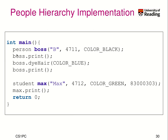How do we use it? We have person boss: name, NHS number 4711, color black. We print it, dye the hair to blue — it works. Then we have student max, which takes the name, NHS, the color, and additionally a student ID, and we can print it.